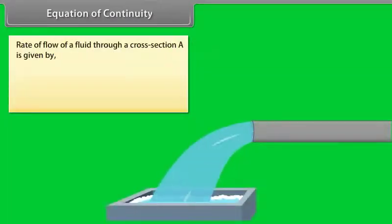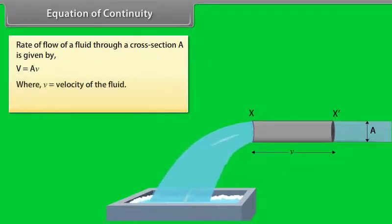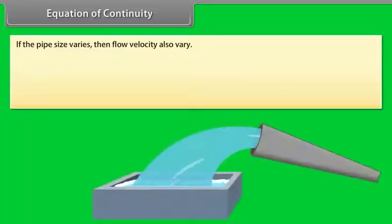Equation of Continuity. Rate of flow of a fluid through a cross-section A is given by V equals AV, where V is the velocity of the fluid and capital V is the volume of the fluid. If the pipe size varies, then flow velocity also varies.